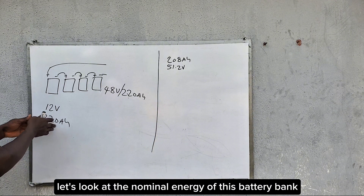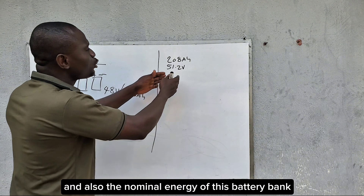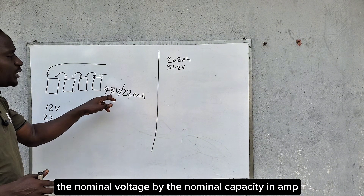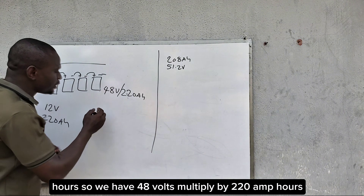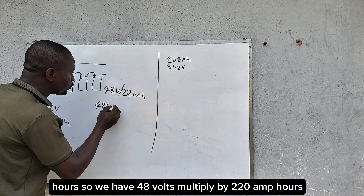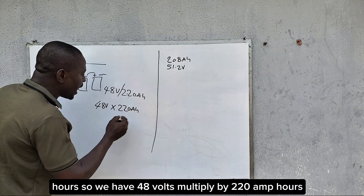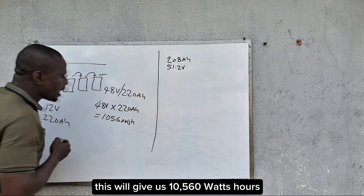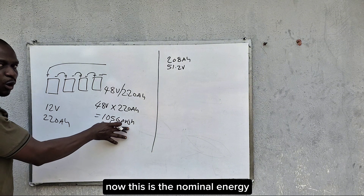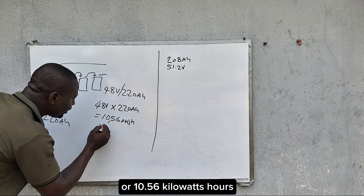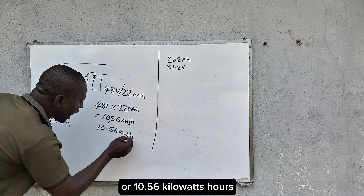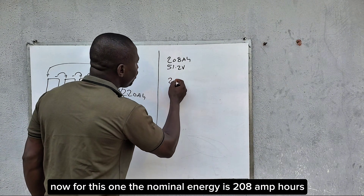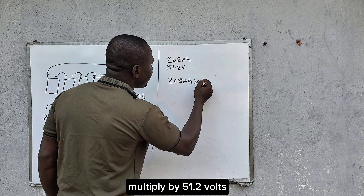Now let's look at the nominal energy of each battery bank. To calculate nominal energy, we multiply the nominal voltage by the nominal capacity in amp hours. For the tubular battery bank: 48 volts multiplied by 220 amp hours gives us 10,560 watt hours, which is 10.56 kilowatt hours.